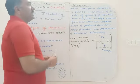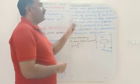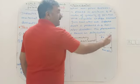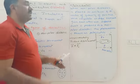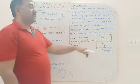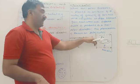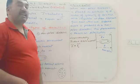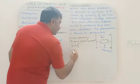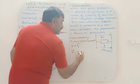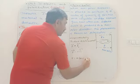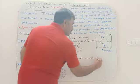The induced dipole moment is directly proportional to the intensity of the electric field. To remove the proportionality we introduce a constant: p = αE₀, where α is known as atomic or molecular polarizability.